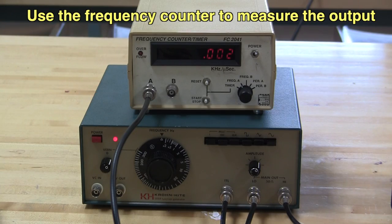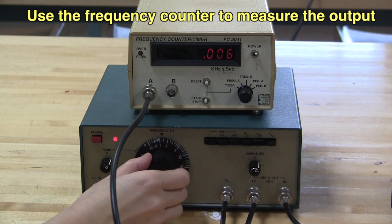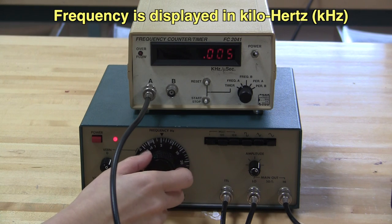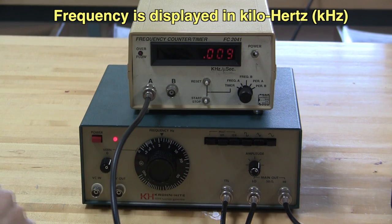We can also connect the frequency generator to the counter to measure its output. The frequency is shown in kilohertz or 10 to the third hertz.